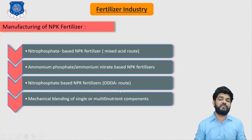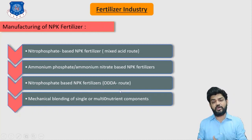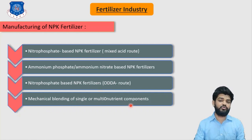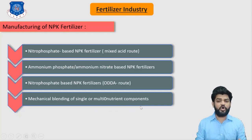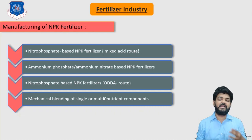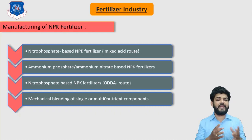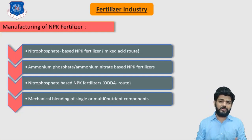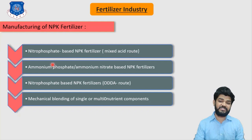The third method is again a nitrophosphate method but uses a different route known as the ODDA route. The fourth method is mechanical blending of single or multiple nutrient components, where we mechanically mix all the NPK compounds to define the ratio of nitrogen, phosphorus, and potassium. Among all methods, the mixed acid route is largely used for manufacturing NPK fertilizer.